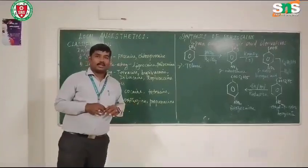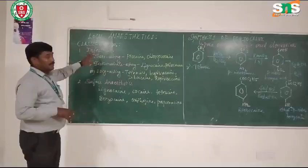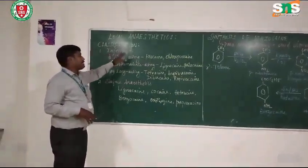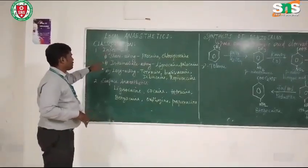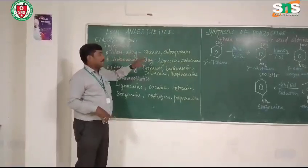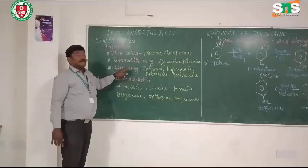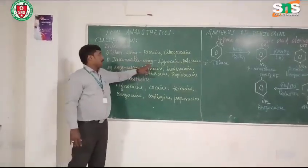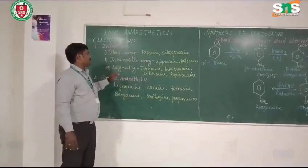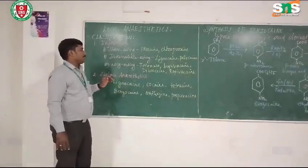Let us see the classification of local anaesthetics. According to their action, they are classified as follows. The first type is injectable local anaesthetics, which are further classified into short-acting — examples include procaine and chloroprocaine; intermediate-acting — lidocaine and prilocaine; and long-acting injectables — tetracaine, bupivacaine, lidocaine, and proparacaine.